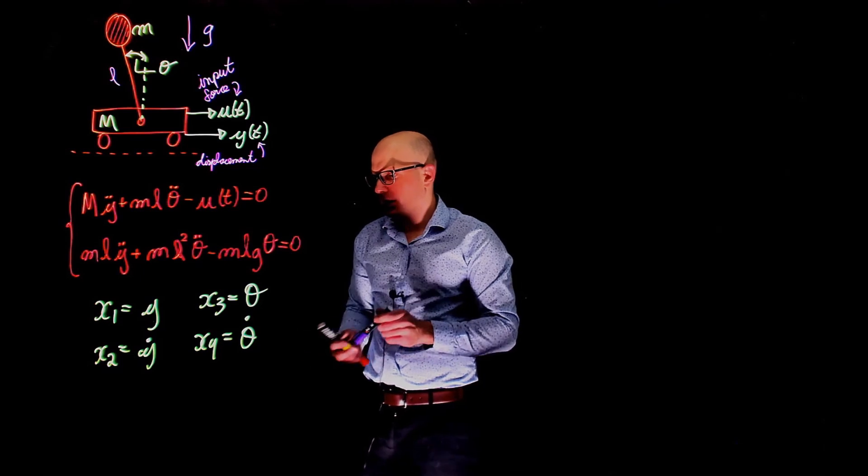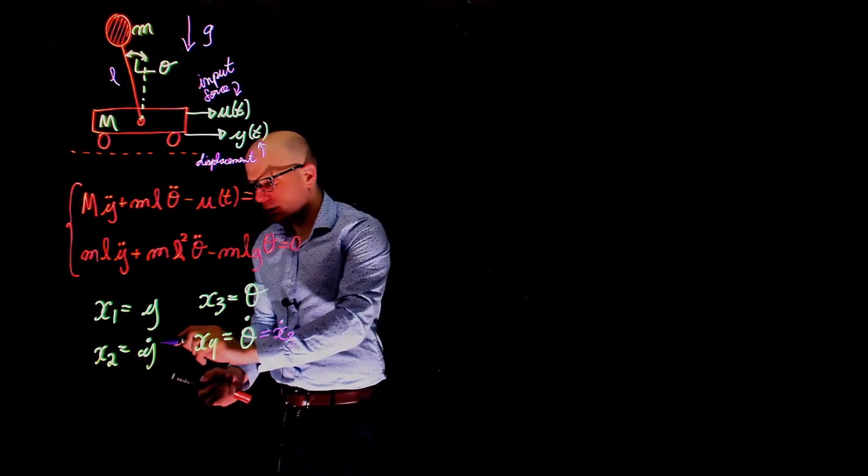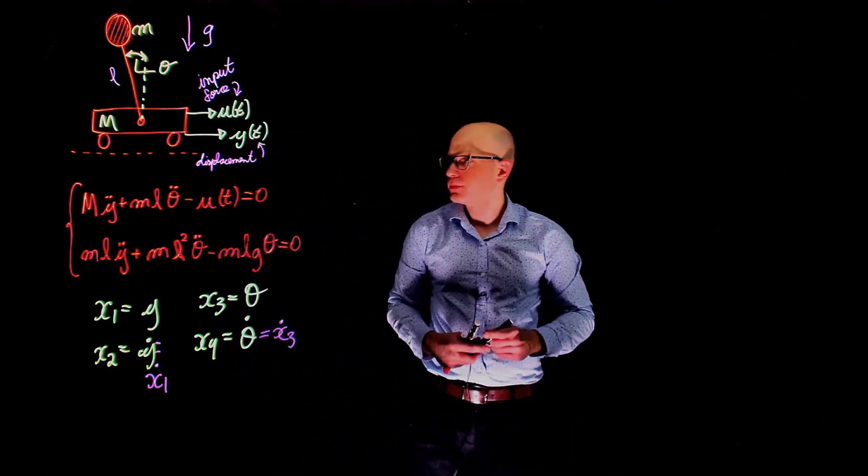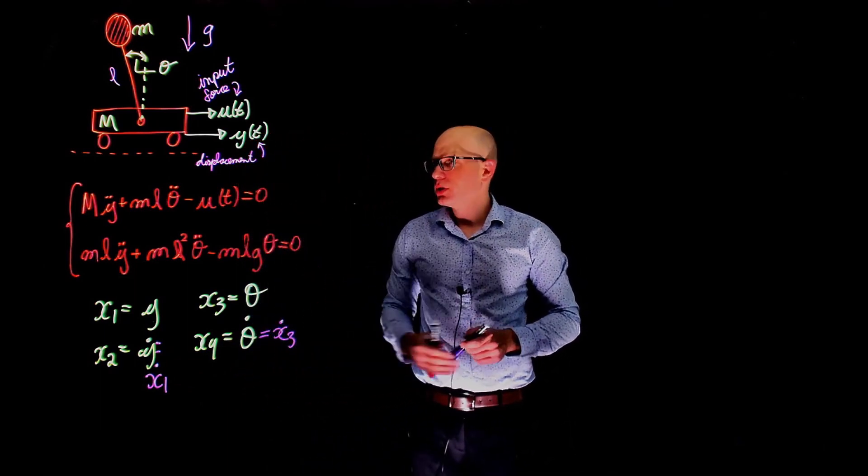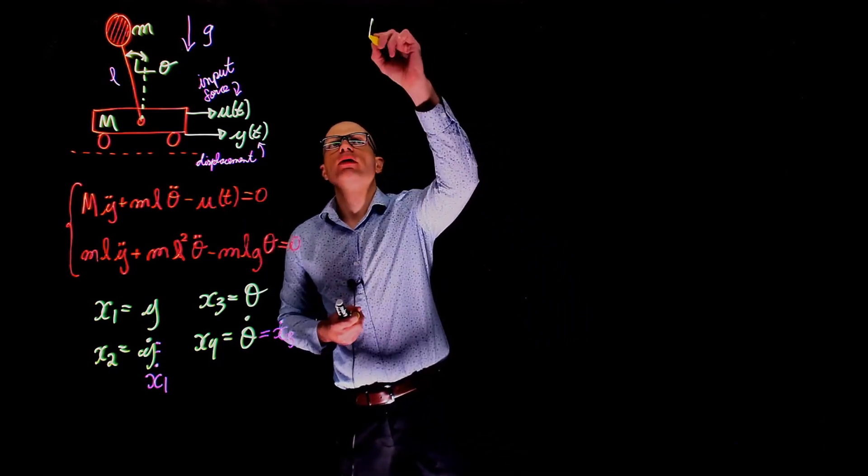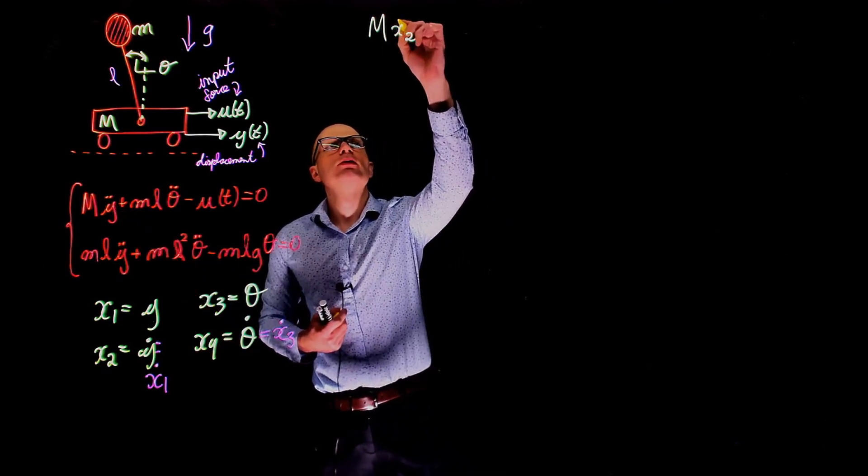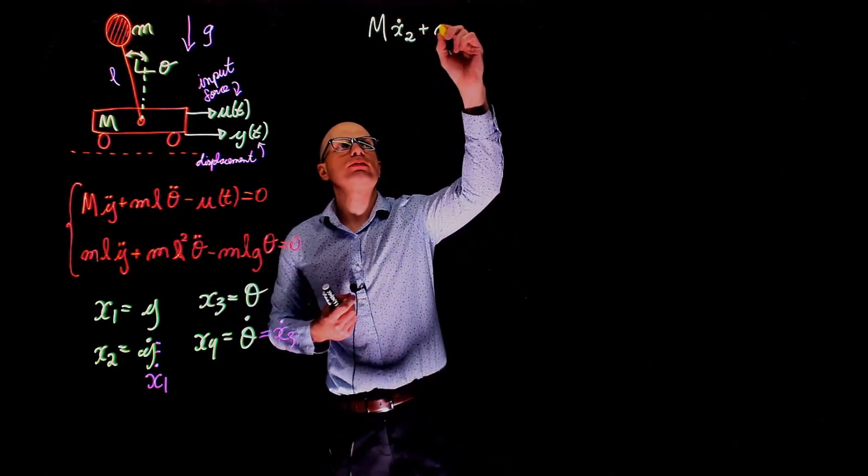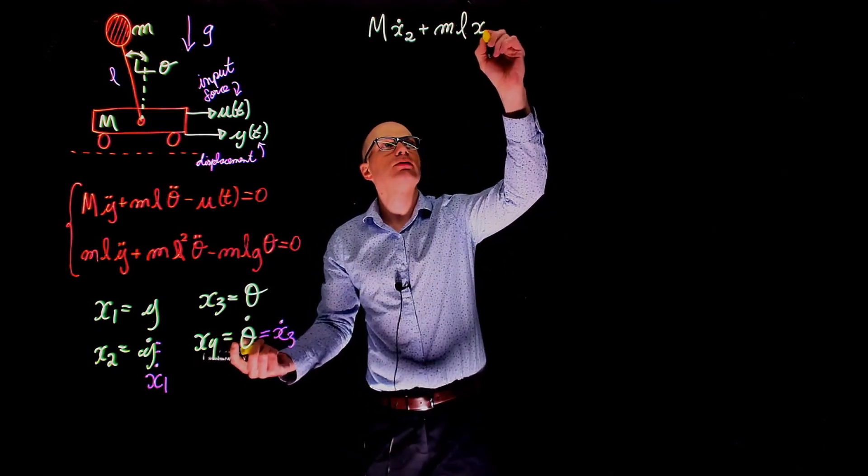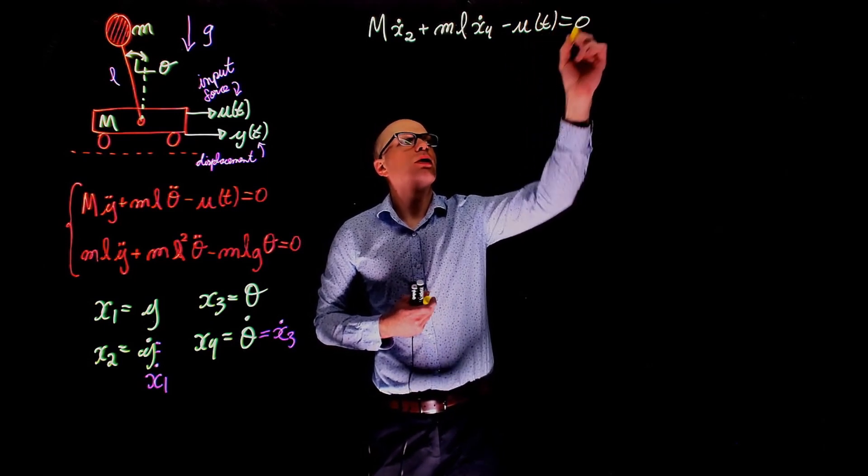If x4 is theta dot, this is the same as x3 dot. And if x2 is y dot, this is the same as x1 dot. Now we can rewrite these equations using the state space variables. Let's start with the first one here. We have m times y double dot, which is x2 dot, plus ml, these are constants, theta double dot, that is x4 dot, minus u of t equals to zero.